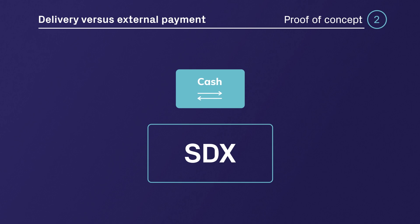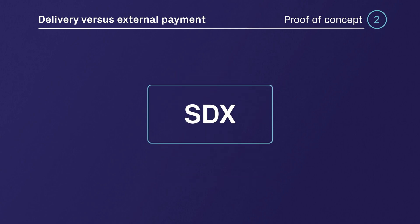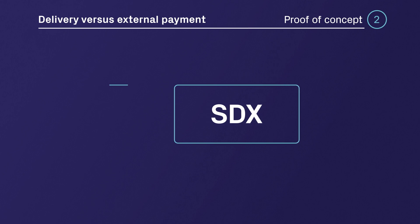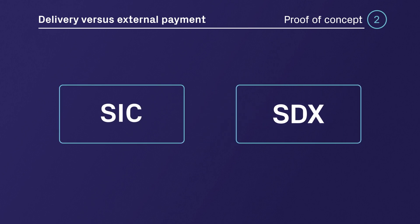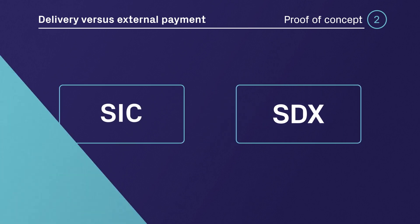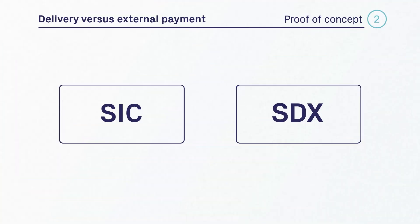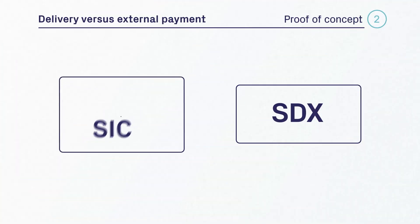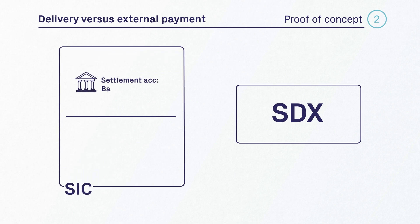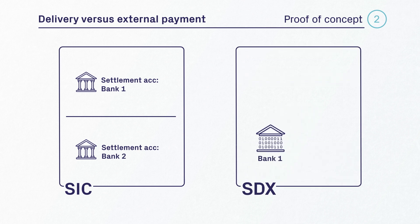In this example, the transaction originates from an over-the-counter trade which is settled jointly by the SDX and SIC platforms. On the SIC platform we have settlement accounts for Bank 1 and Bank 2. On the SDX platform we have the nodes of Bank 1, Bank 2, and the notary node.